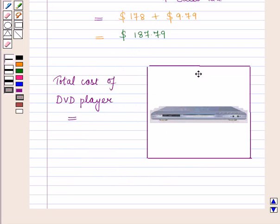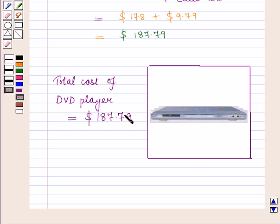So the total cost of this DVD player is $187.79. This is the solution of the given question. That's all for this session — hope you all enjoyed it.